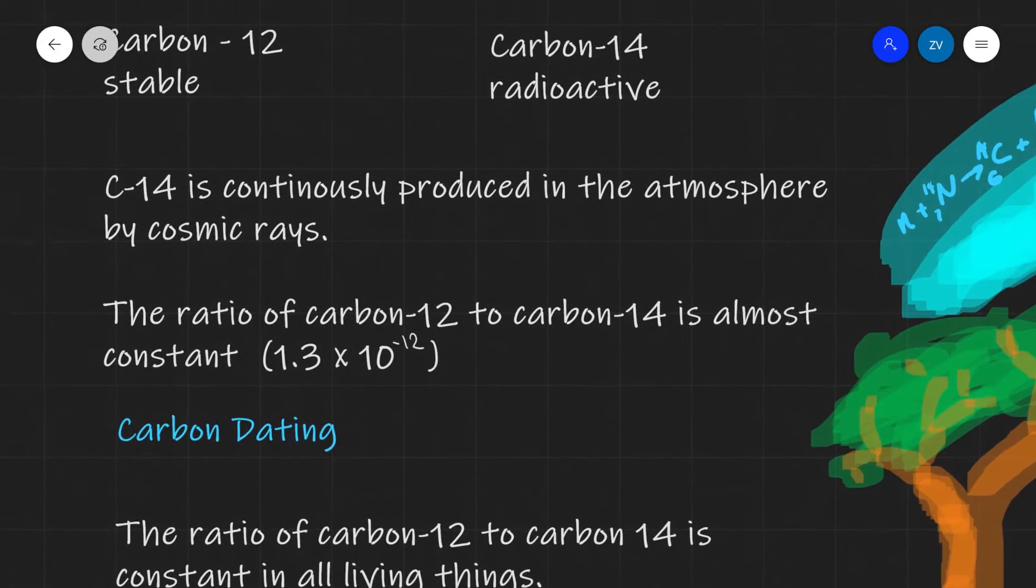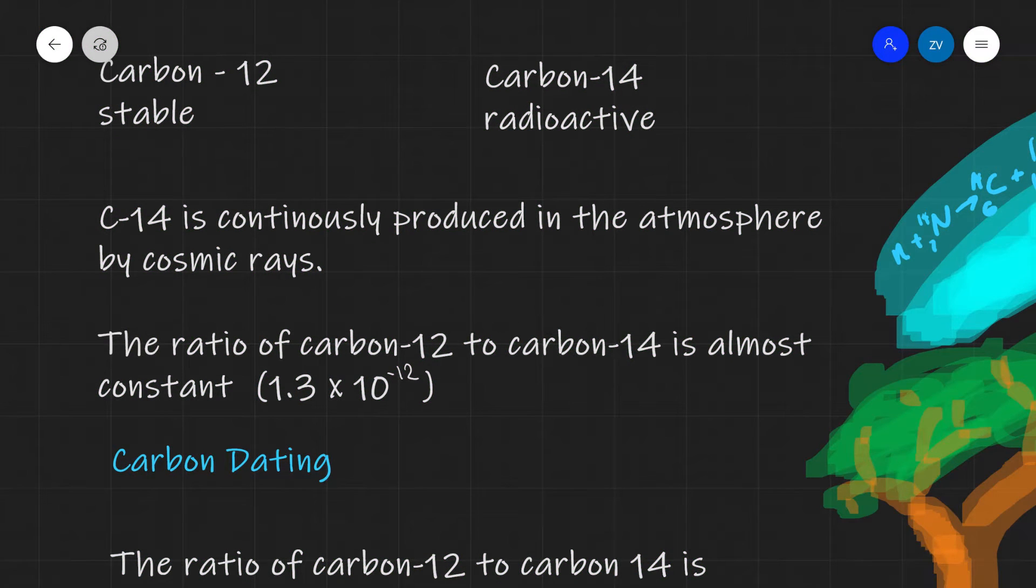Now, the ratio of carbon-12 to carbon-14 is almost constant. It's always around 1.3 times 10 to the power of minus 12, which you don't need to remember for the exam. How could this be constant if carbon-14 is continuously being produced? Shouldn't that ratio be changing?